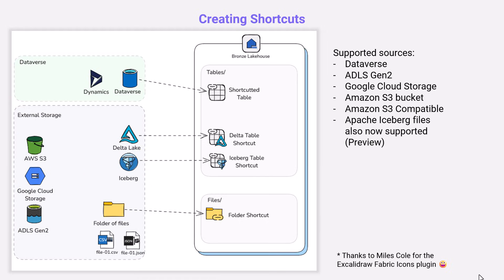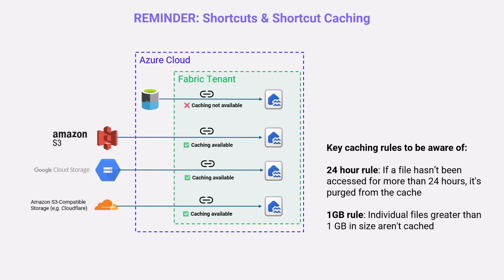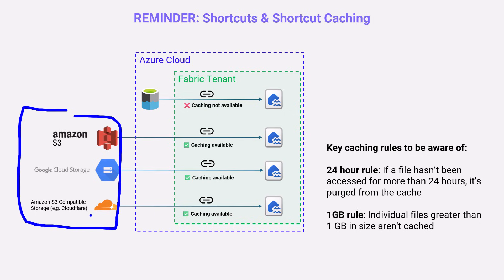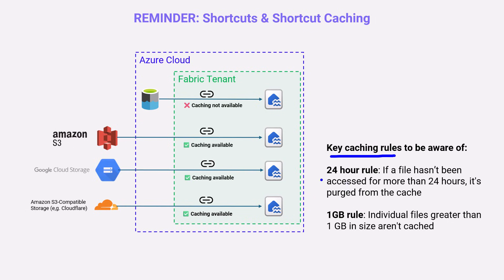Shortcut caching is a workspace setting in your Fabric workspaces. It allows you to create a cache inside Fabric to minimize egress fees from external platforms. It's available for Amazon S3, S3-compatible, and Google Cloud Storage, but not for ADLS Gen 2 since it's already in the Azure cloud. Key rules: if the cache has not been accessed within Fabric for 24 hours, it will be removed, and any files greater than one gigabyte will not be cached.